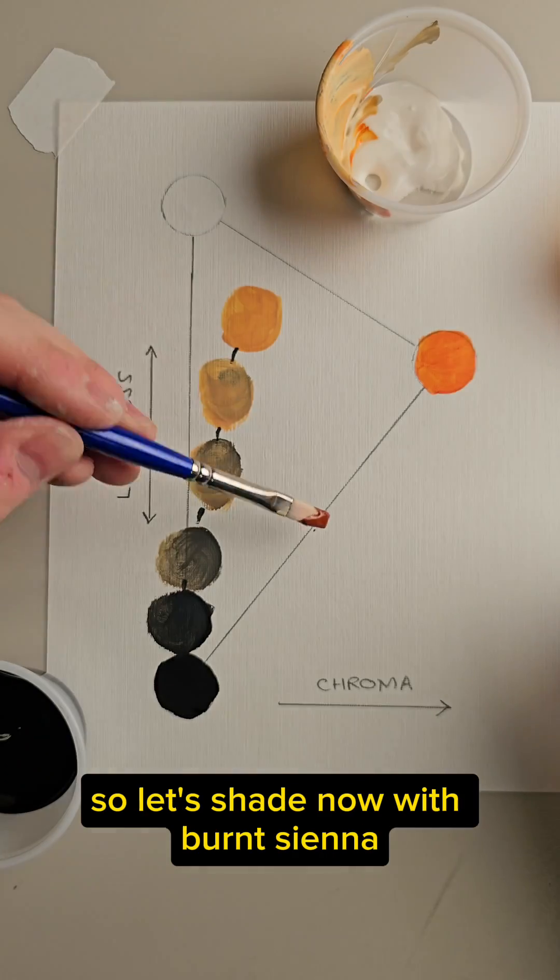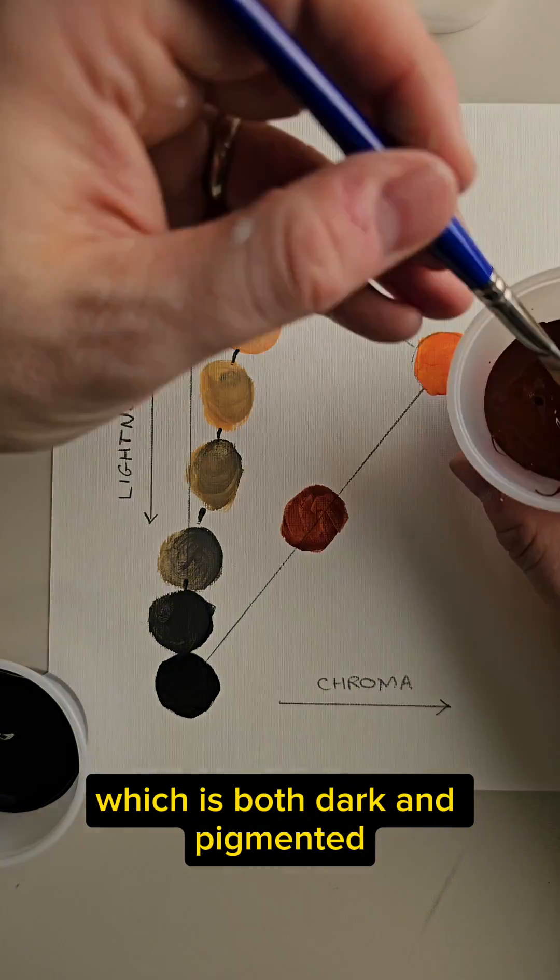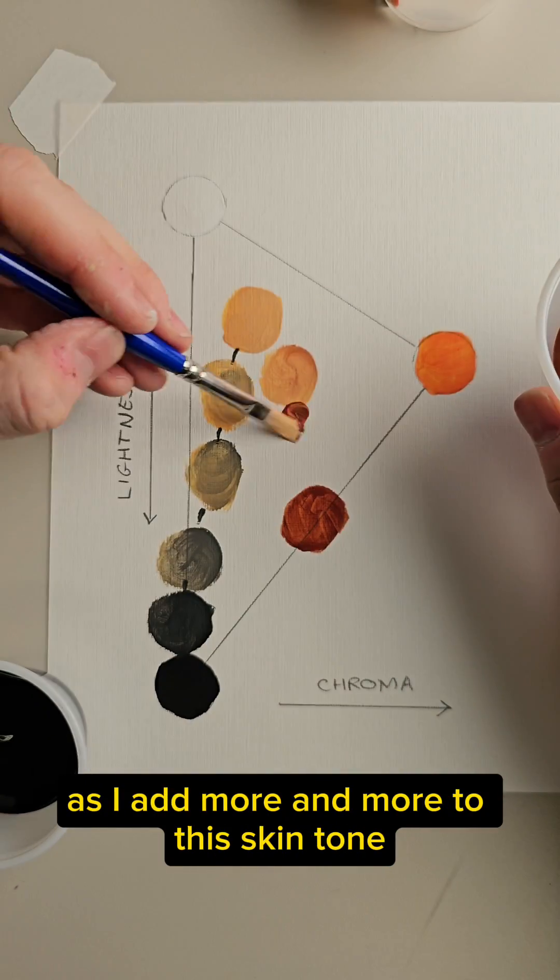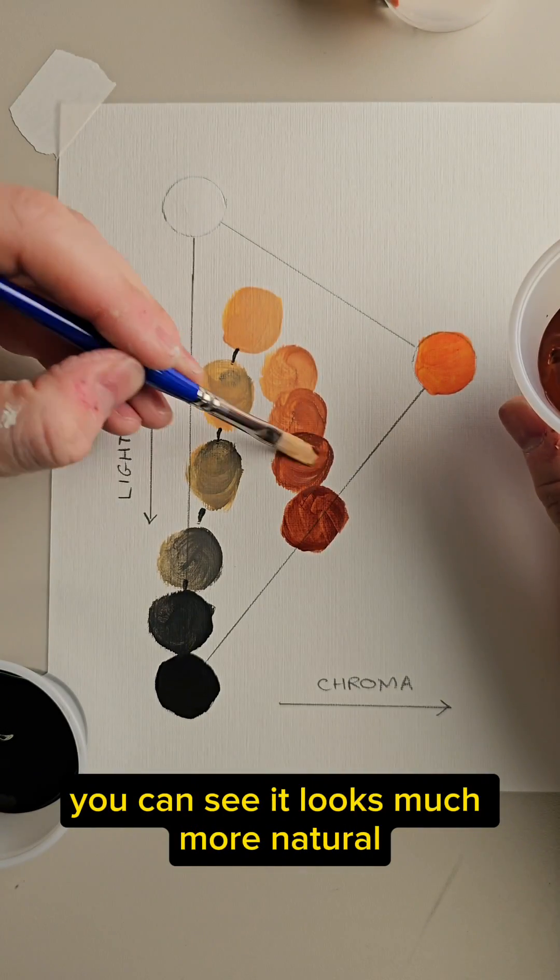So let's shade now with Burnt Sienna, which is both dark and pigmented. As I add more and more to this skin tone, you can see it looks much more natural.